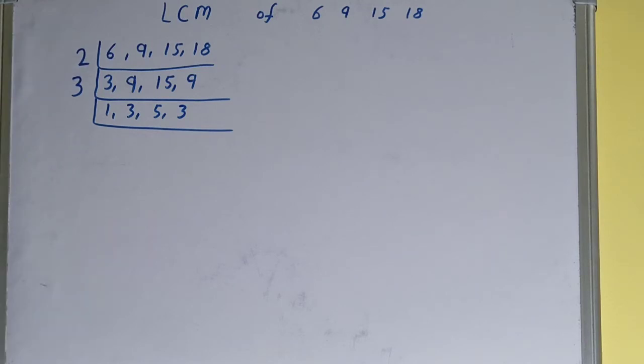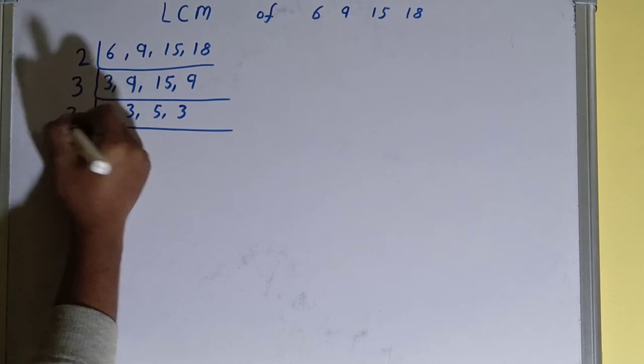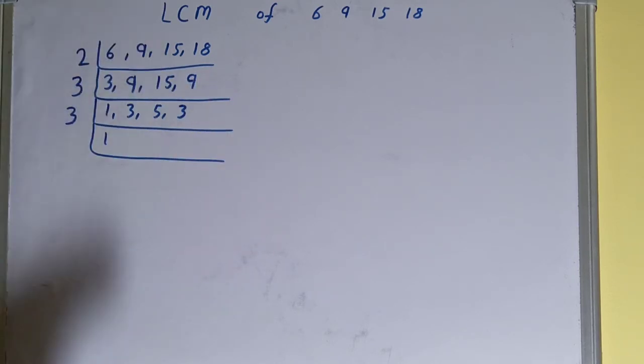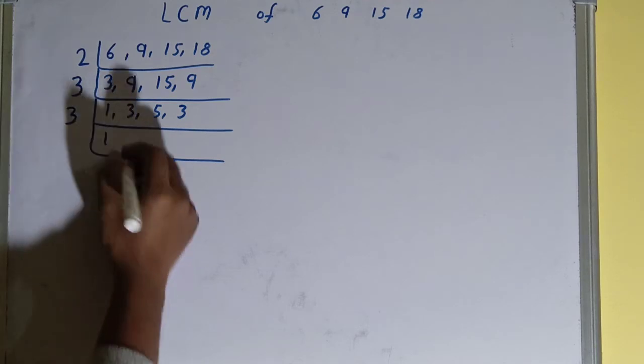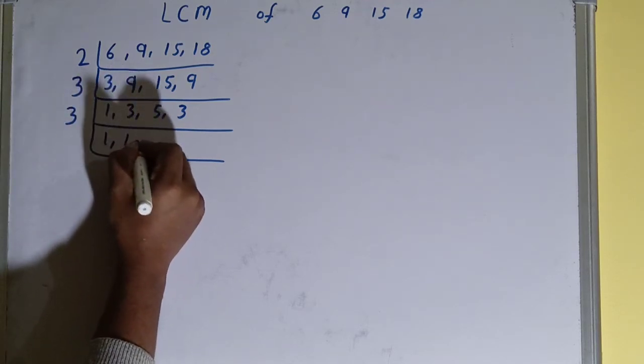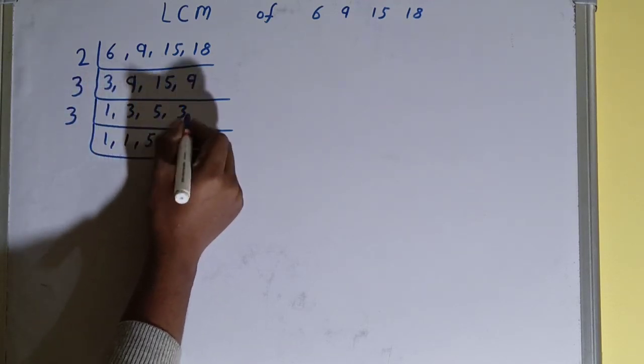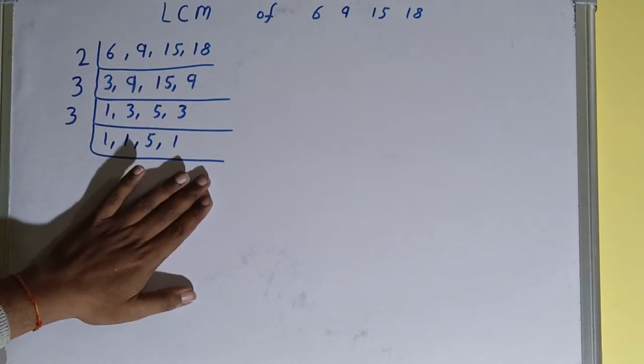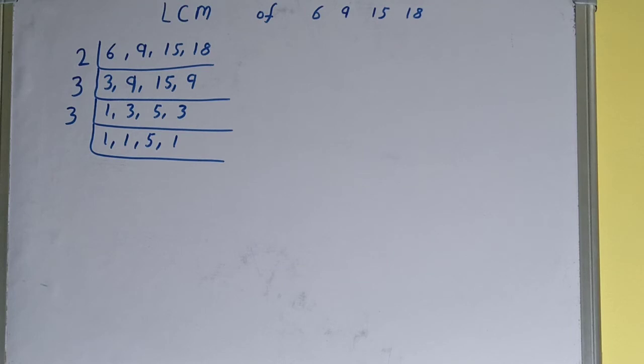The second and the last numbers are divisible, so we'll divide. We'll write 3 over here. The first number will remain the same—we'll not touch it. This will become 1, this will remain the same, and this will also become 1. Now again, if we see, is any of the numbers divisible by 3? None of them, so we go to the next prime number.